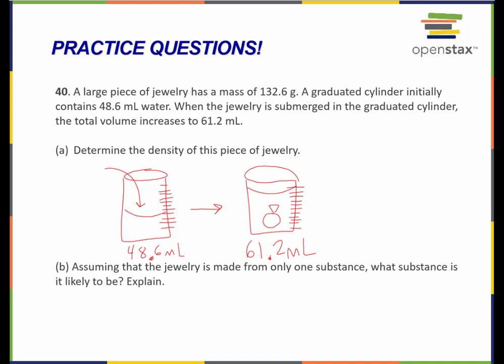What we're trying to determine is the volume of this piece of jewelry. Because remember, the density is equal to the mass over the volume. I've got the mass here, 132.6 grams. I already have the mass. Now I just need to figure out the volume of this piece of jewelry.